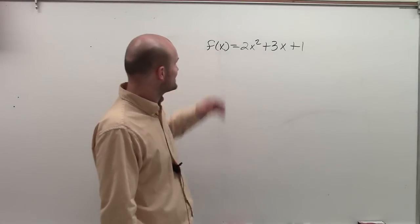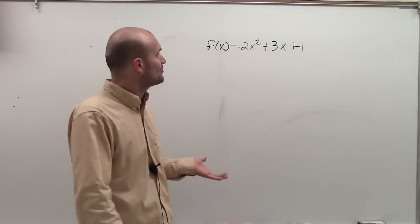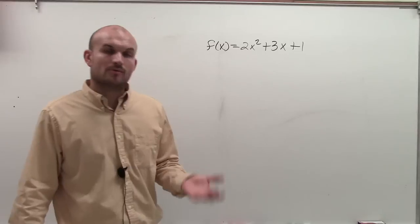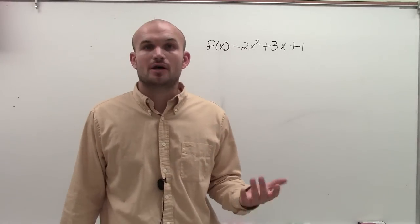Welcome. So what we have here is f of x equals 2x squared plus 3x plus 1. And what we want to do is determine the end behavior of the function.